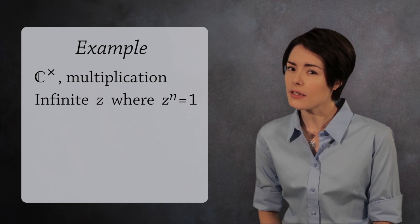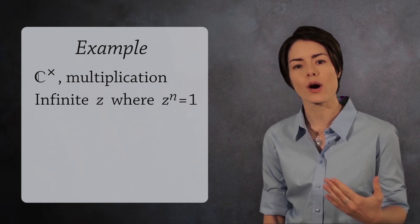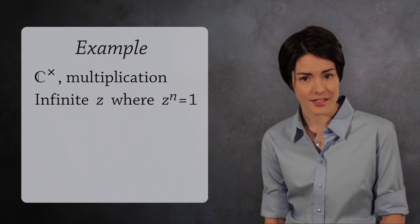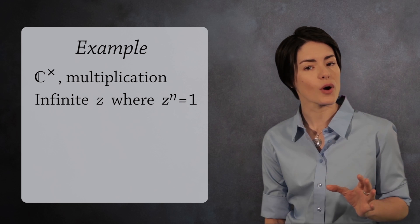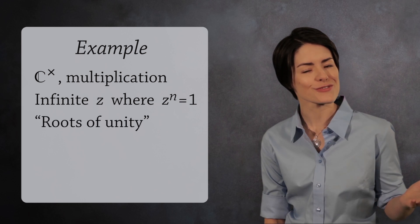There are infinitely many complex numbers z where z to the n equals 1 for a positive integer n. Because they are all nth roots of 1, they are known as the roots of unity.